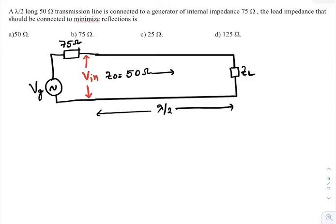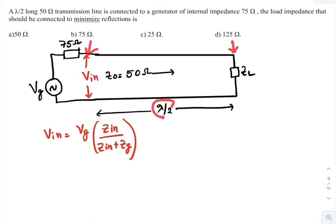Let us say the voltage which is here is input voltage, that is Vin. From this circuit, I can write Vin equal to VG multiplied with input impedance of the transmission line by input impedance of the transmission line plus ZG, internal impedance of the generator. Now here, we require the value of Zin. The distance between this point and this point is lambda by 2.